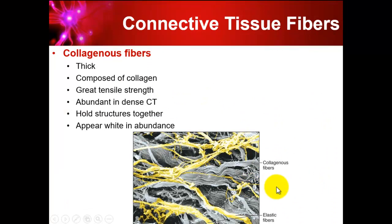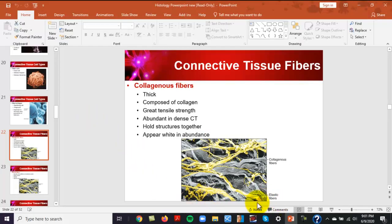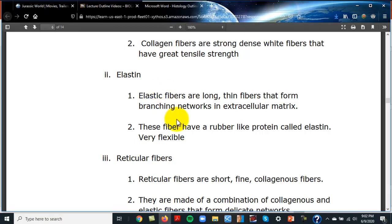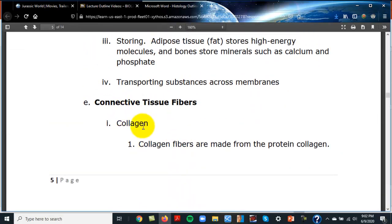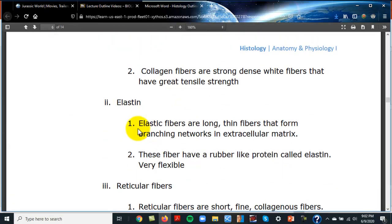Collagen fibers have great tensile strength, meaning they resist pulling. Ligaments and tendons are made primarily of collagen fibers, as are some types of cartilage. They hold structures together and are found in the stronger tissue types.